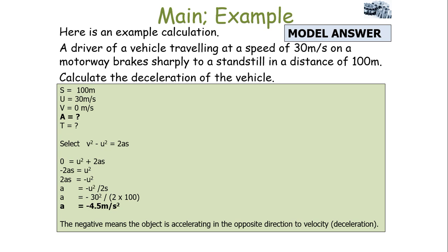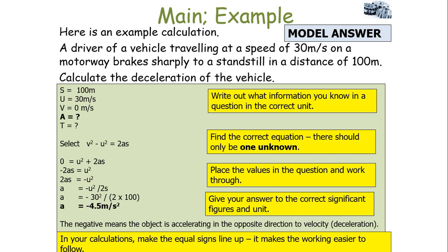Last example: the driver of a vehicle travelling at 30 metres per second brakes sharply to a standstill in a distance of 100 metres. Calculate the deceleration. Write out the known values, select the correct equation — only one unknown — substitute and work through to get A equals minus 4.5 metres per second squared. The negative sign indicates deceleration; the object starts at 30 metres per second and comes to a standstill, so final velocity is 0 metres per second.